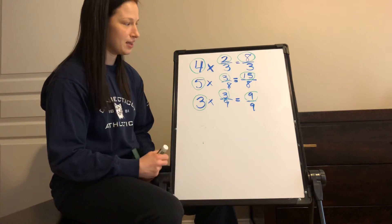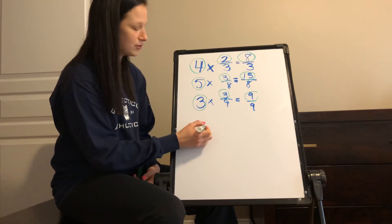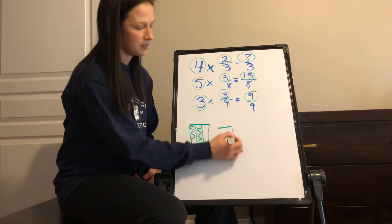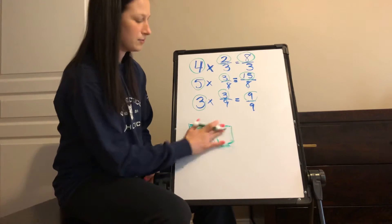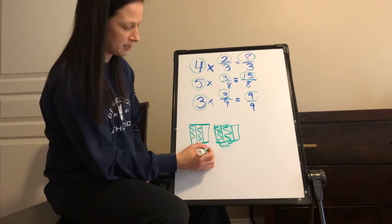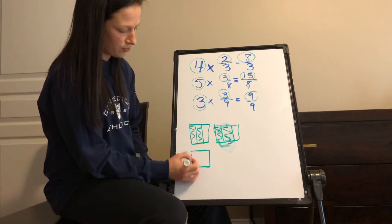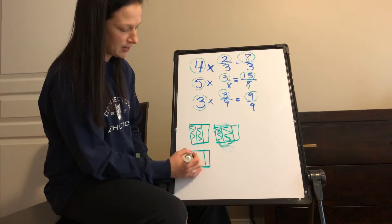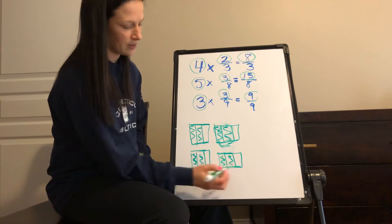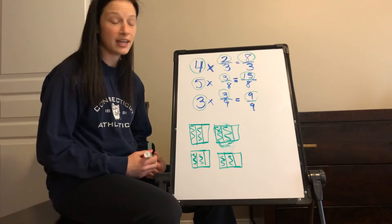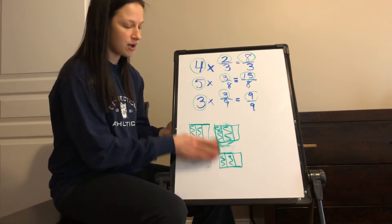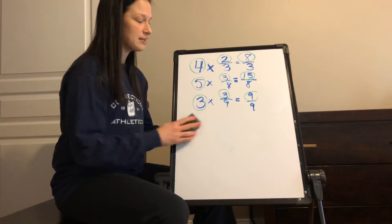The area model is another popular representation. For example, for four groups of two-thirds, students might draw two-thirds plus two-thirds repeated — they're making sense of what four groups of two-thirds means. That's fine. So that is multiplying a whole number times a fraction, and now I'm going to talk about converting these improper fractions to mixed numbers.